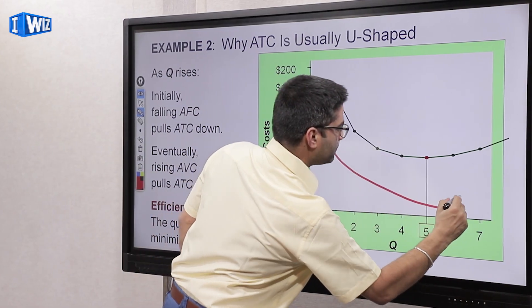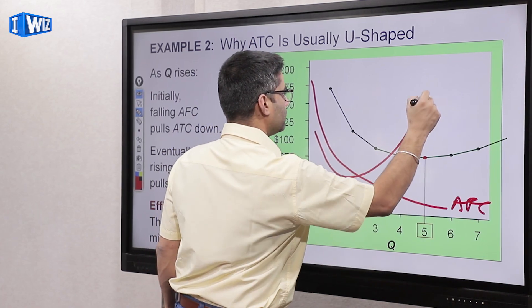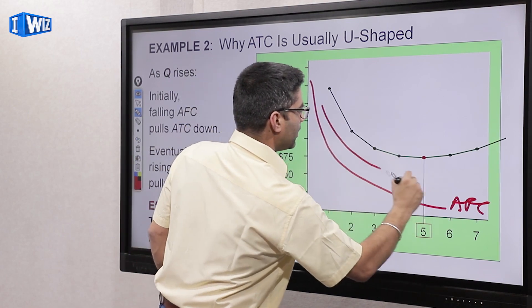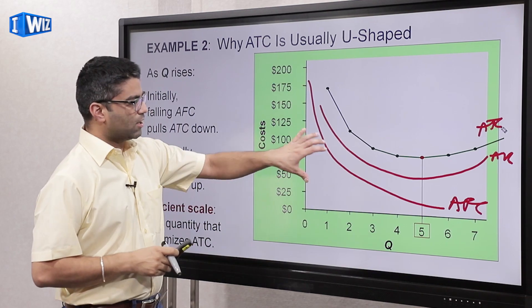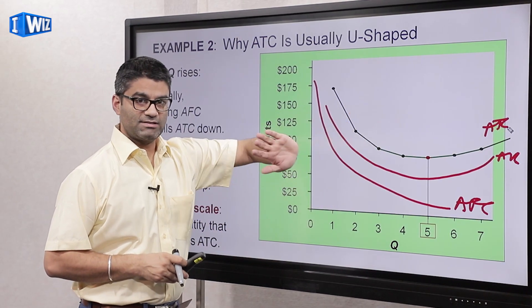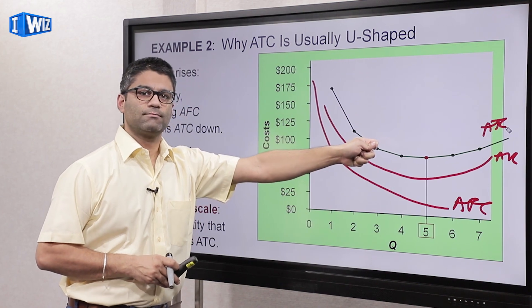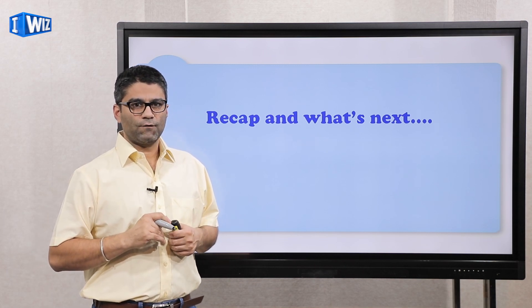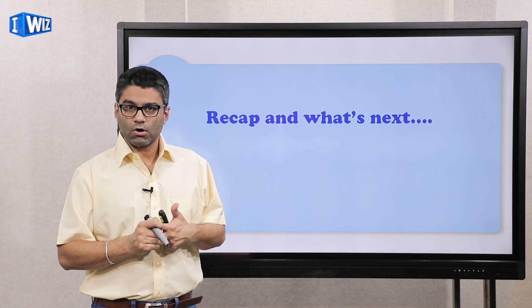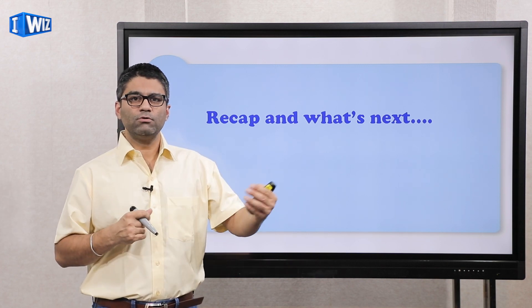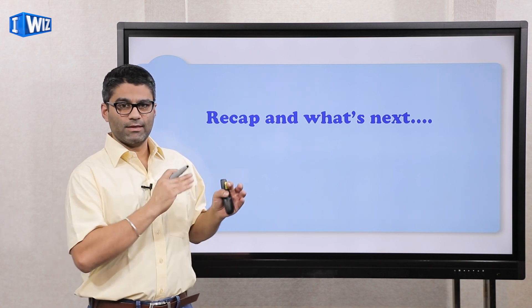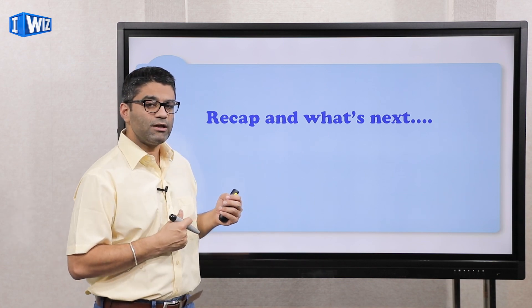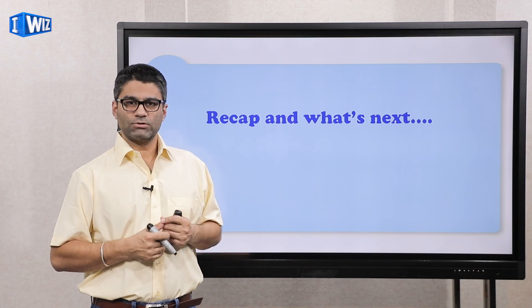Putting everything together: your AFC is always downward sloping, your average variable cost is U-shaped, and your average total cost is also U-shaped because it's a combination of AFC and AVC. ATC is always above both AFC and AVC because you're adding those two together to get it. In this video you should have a good understanding of how AFC, AVC, and ATC are drawn and the relationship between the three. In the next video we'll talk about marginal cost, and then in a couple of videos after that I'll do a detailed numerical example looking at the relationships between all of these curves.